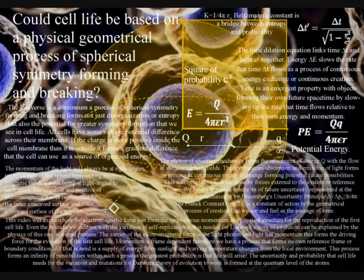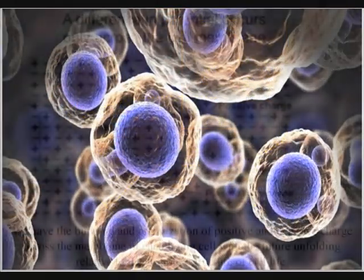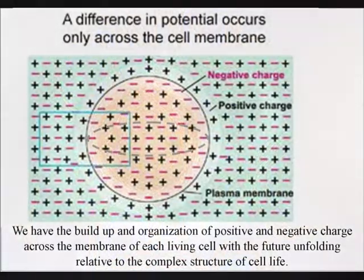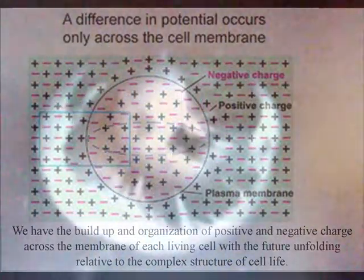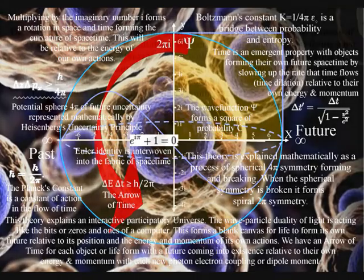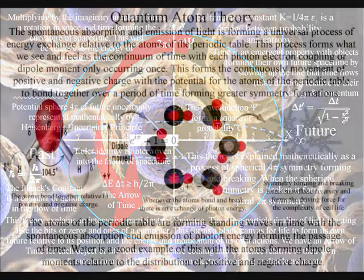With the build-up and organization of positive and negative charge across the membrane of each living cell, the symmetry of life is never perfect because it is formed out of the broken symmetry that is innate within the fabric of our universe.